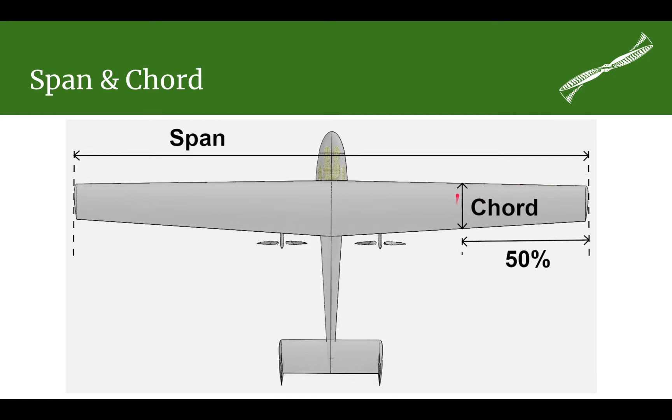The chord is the distance from the leading edge of a flying surface to the trailing edge of a flying surface. In this case, you can see that our wing is tapered.